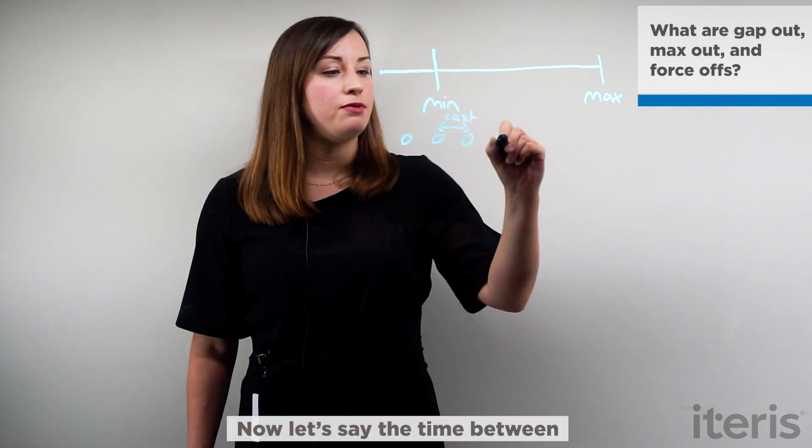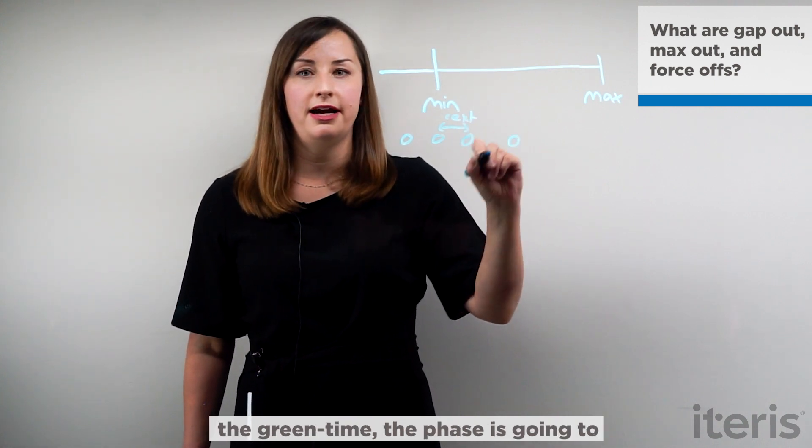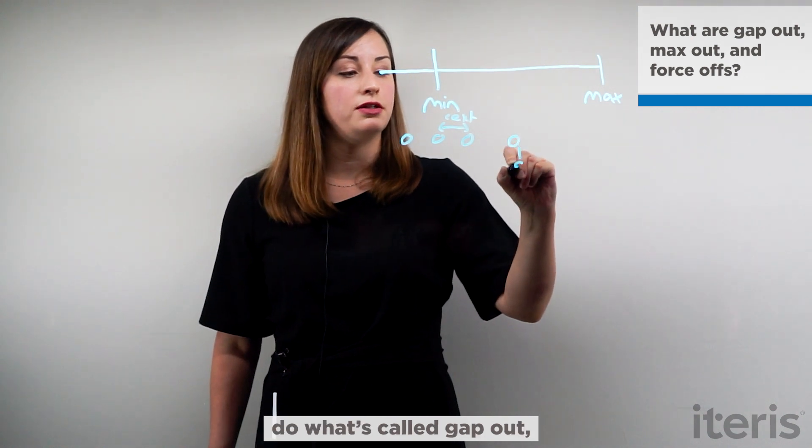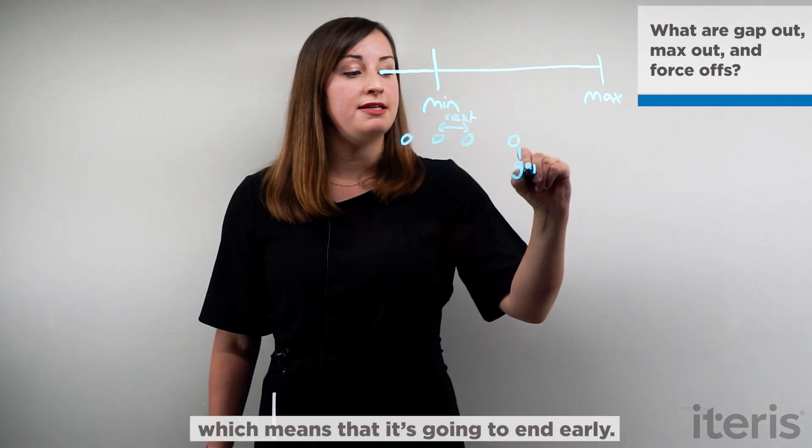Now let's say the time between detector actuations is greater than the green time. The phase is going to do what's called gap out, which means that it's going to end early.